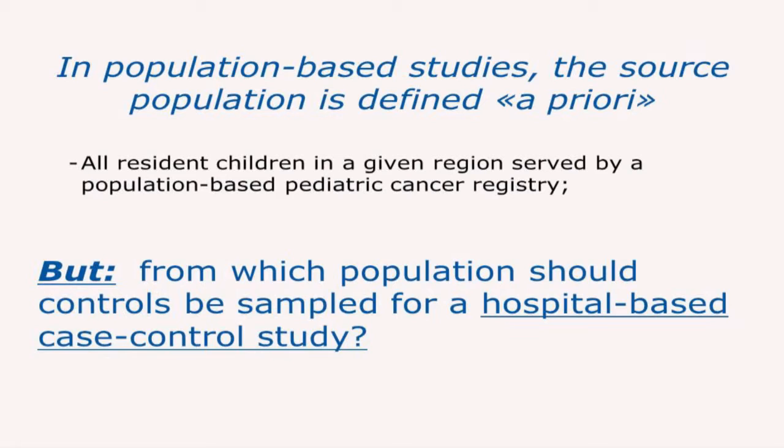In this population-based study, the source population was defined a priori — represented by all children aged 0-10 years living in the participating regions. It was very clearly defined, and we had the list of them name by name. In contrast, if you are carrying out a hospital-based case-control study and you are not sure which is the source population feeding your hospital cases, how do you select your controls? That is the big question in hospital-based case-control studies.